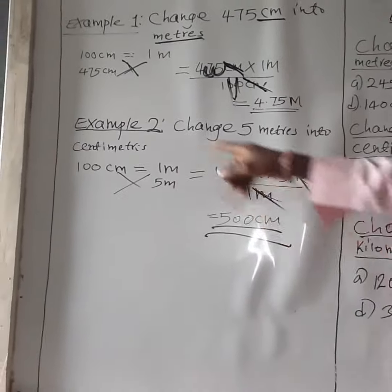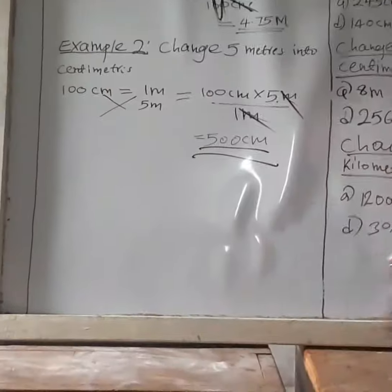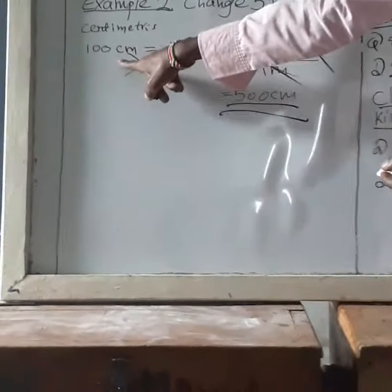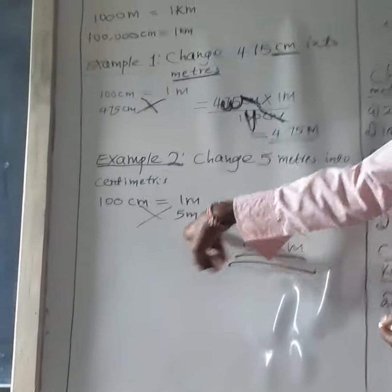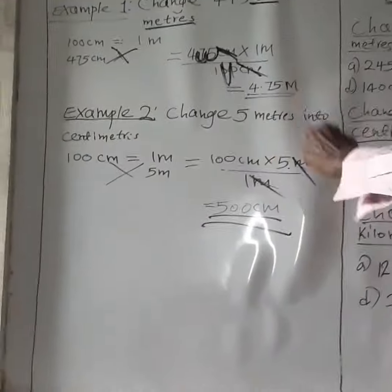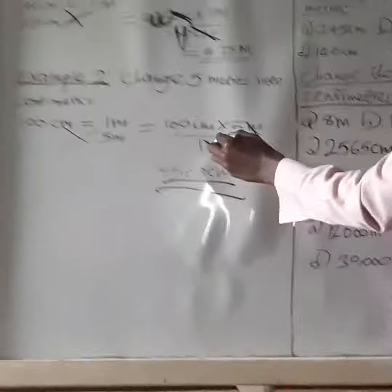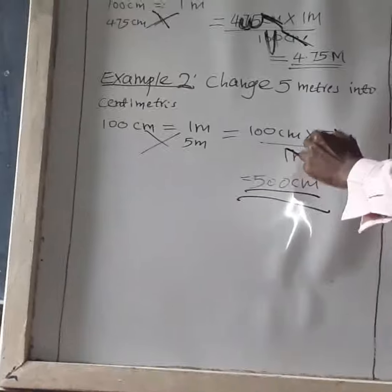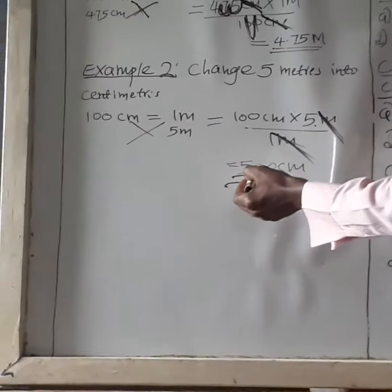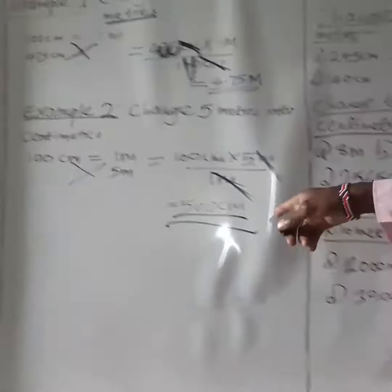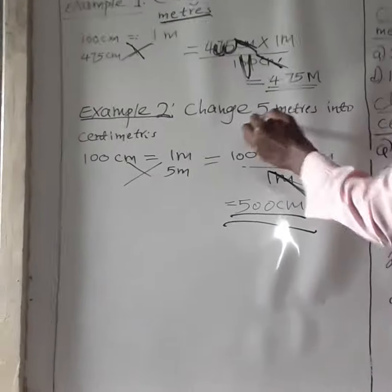In Example 2, we are changing 5 meters into centimeters. You go back to the relationship between meters and centimeters, whereby 100 centimeters equal to 1 meter. What are 5 meters? You cross-multiply: 100 centimeters times 5 meters, all over 1 meter. Meter will cancel meter. Then you will have 100 centimeters times 5. That gives you 500 centimeters. So in short, when you convert 5 meters into centimeters, you will have 500 centimeters.